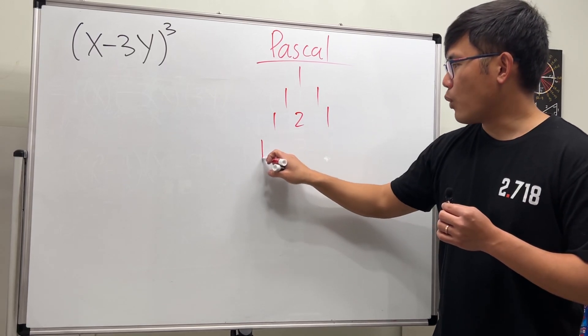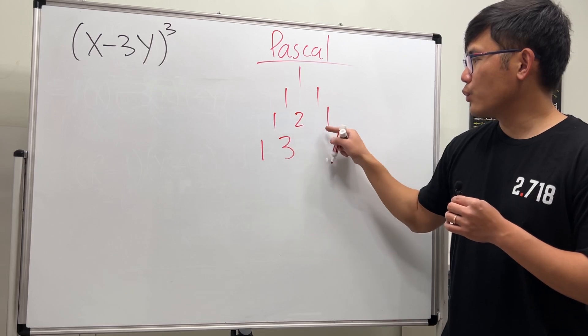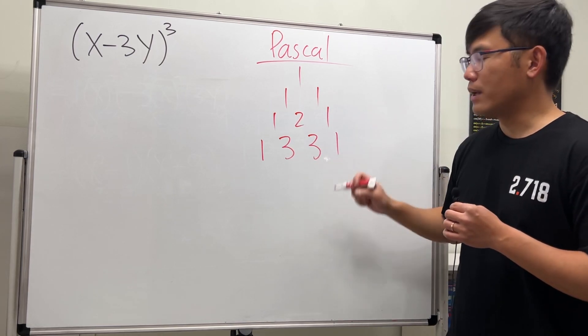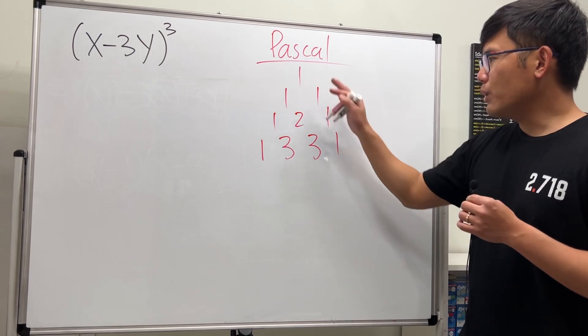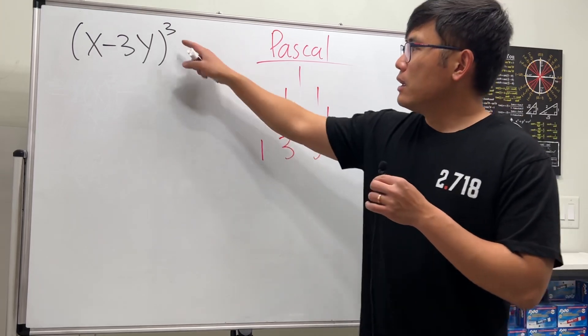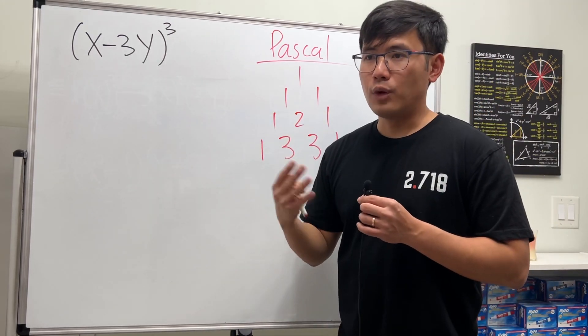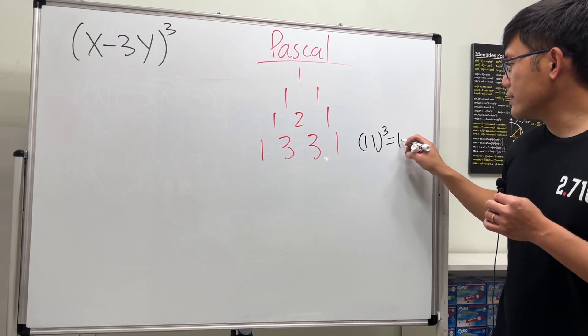Because we are trying to get to the third power, so you want to see the third row right here, so it's the next row. So we have one, and we add one and two, which is three, and then we add two and one, which is three, and then you have that one. So this is the third row. And if you don't want to write this down every single time, I'll have a better way for you guys. Whenever you have the power to the fourth power, you can just do this. In fact, 11 to the third power is equal to one three three one.